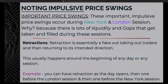Important impulsive price swings occur during the New York and London sessions because there's lots of liquidity, and gaps or imbalances get taken and filled during these sessions. You should also look out for something called retractions. A retraction is essentially a fakeout — it takes out traders and then returns to the intended direction. This usually happens around the beginning of any day or session: you can have a retraction as the day opens, one before the London session, and one before the New York session.